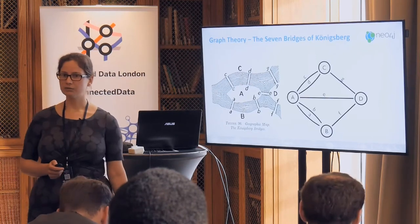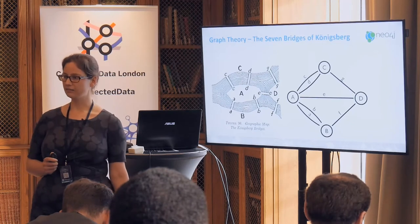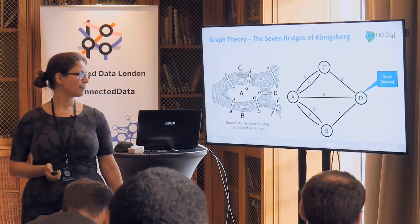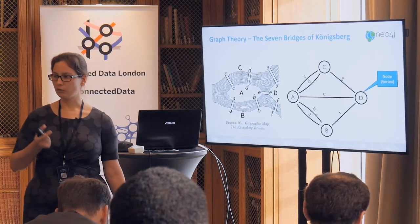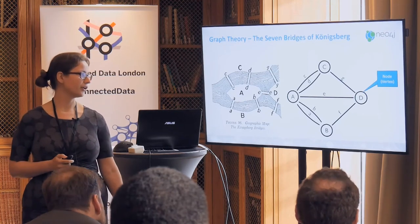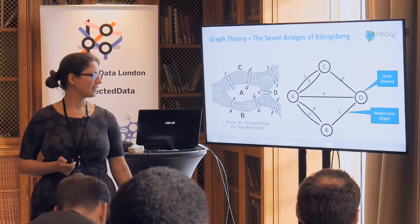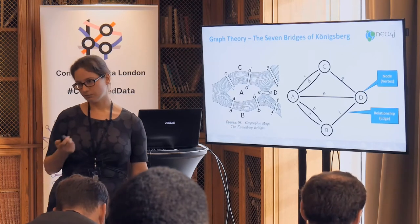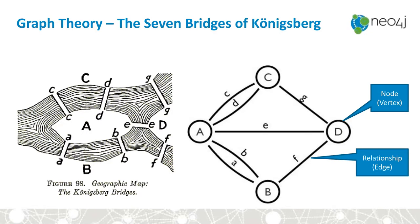What he did was simplify this down. He called the bits of information — the points of interest — nodes or vertices, and the connections between them edges, or as I refer to them, relationships. Immediately simplifying down this information to that — that's pretty much a graph.